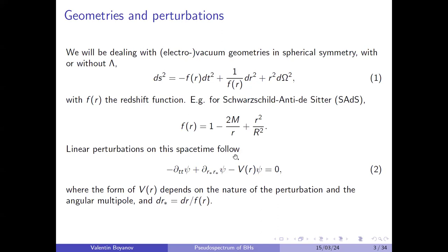The geometries we'll be looking at generally have a vacuum form with or without electric charge or cosmological constant. One particular example we'll look at a lot is the Schwarzschild anti-de Sitter spacetime, which has a redshift function of this form.